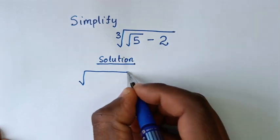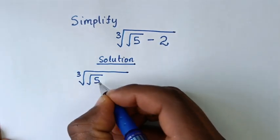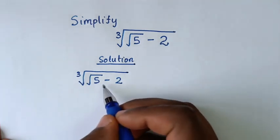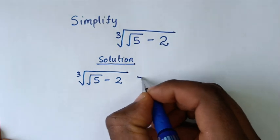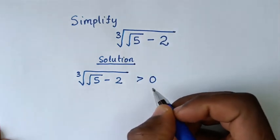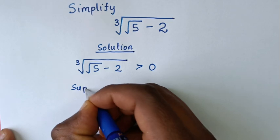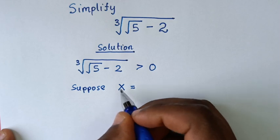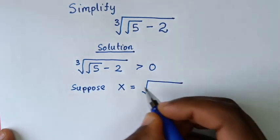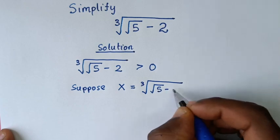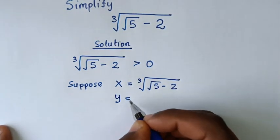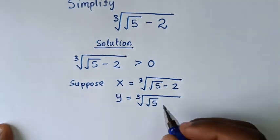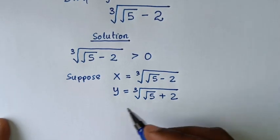From cube root of (square root of 5 minus 2), since square root of 5 is greater than 2, the domain should be greater than 0. Now, suppose we let x equal to cube root of (square root of 5 minus 2), and y equal to cube root of (square root of 5 plus 2). We'll be finding the value of x.